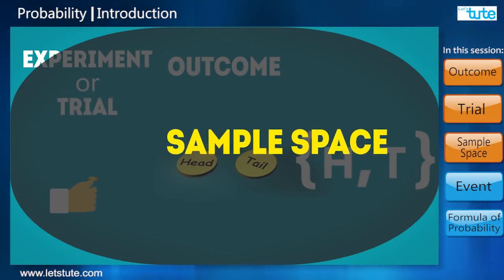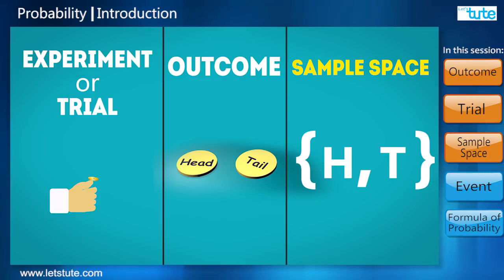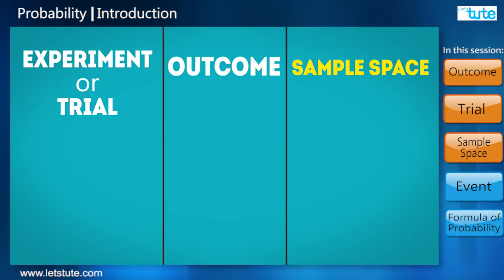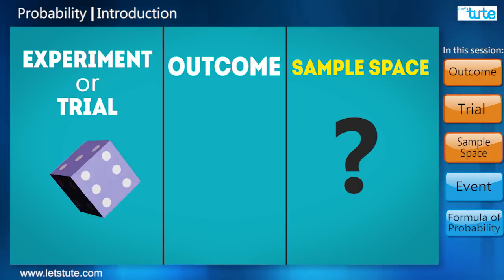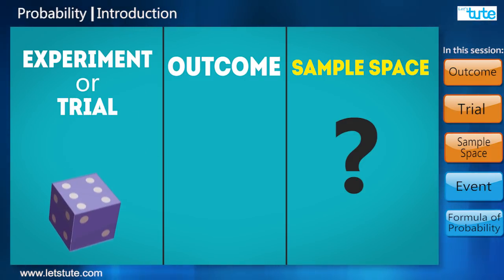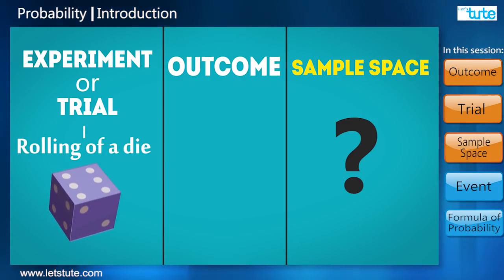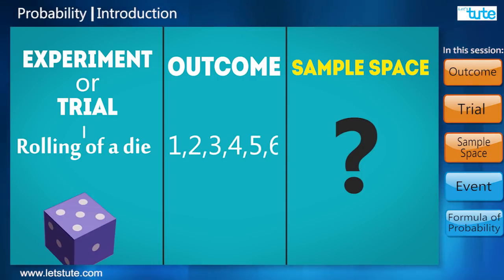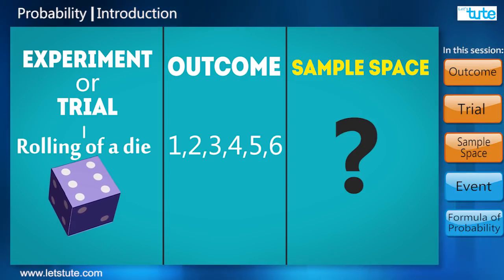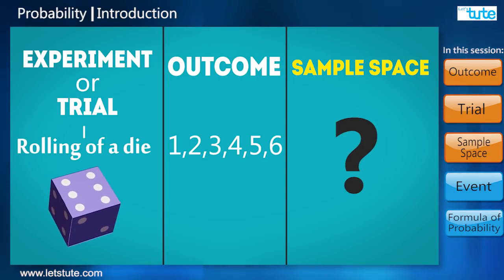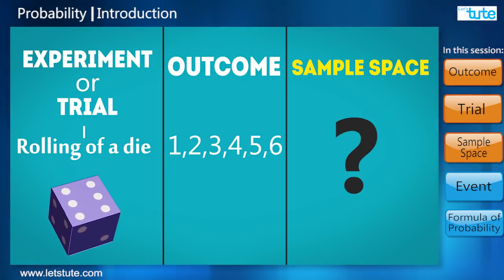So can you tell me what would be the sample space when a dice is rolled? The action here is rolling of a dice, so it is called a trial. When the dice is rolled, we could get one, two, three, and so on till six. These are the possible results or the outcomes. So the sample space here would be the set S = {1, 2, 3, 4, 5, 6}.